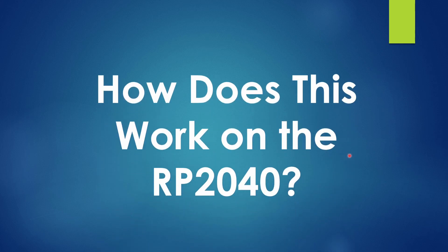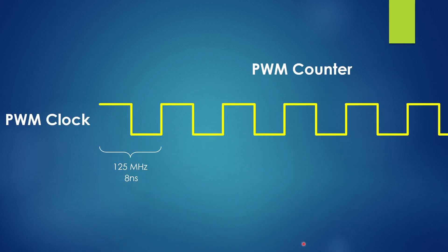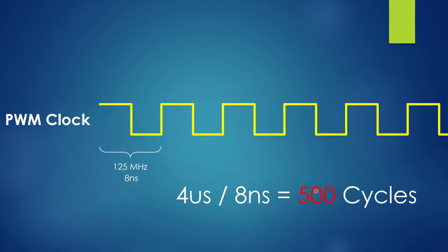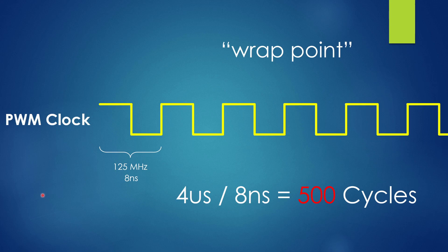So the question is, how do we do pulse width modulation on the RP2040? The RP2040 has a PWM clock that operates at 125 megahertz, or 8 nanoseconds per cycle. This clock counts up every 8 nanoseconds and increments a counter internally up to 65535, then cycles back around to zero. To create a 4 microsecond period PWM scheme, we divide our period time — 4 microseconds — by the clock time of 8 nanoseconds, giving us a 500-cycle counter. We then set a wrap point telling the PWM counter to wrap around at 500, which gives us a period of 4 microseconds.